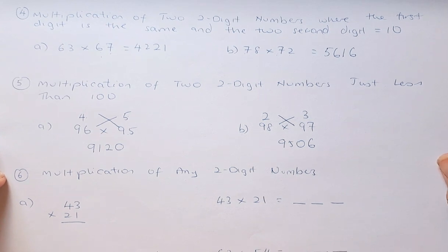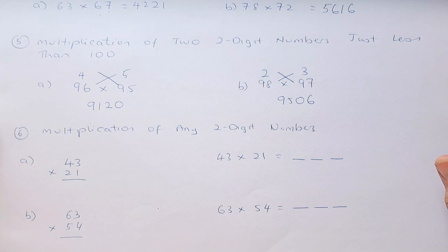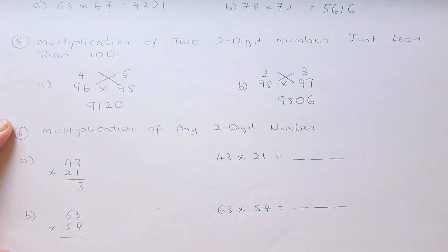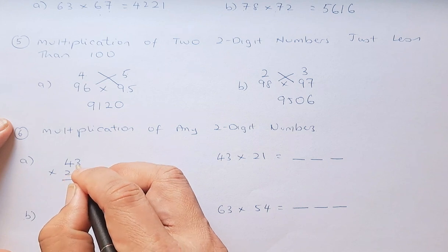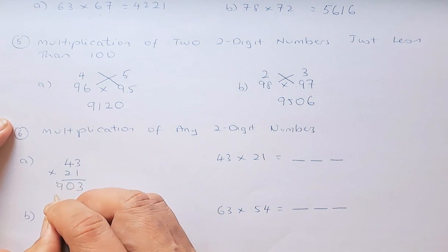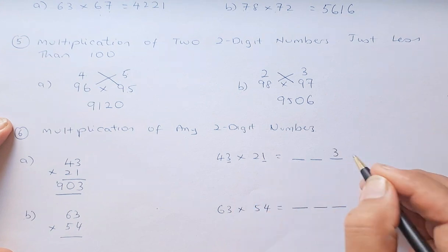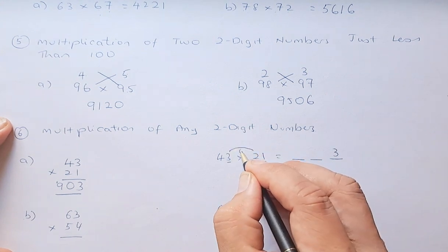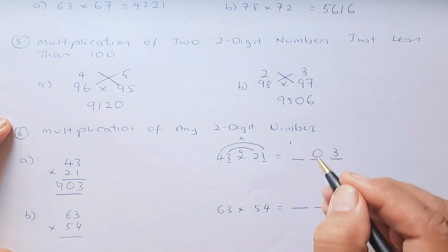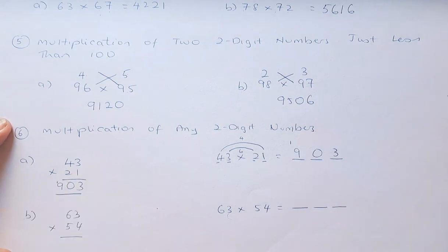Shortcut 6 is the multiplication of any 2-digit numbers. There are two equivalent methods: cross-multiply and the rainbow method. For 32 times 41: first, 3 times 1 is 3. Then cross-multiply — 4 times 1 is 4, and 2 times 3 is 6, giving 4 plus 6 equals 10, so write 0 and carry 1. Finally, 4 times 2 is 8 plus 1 equals 9. The answer is 903.